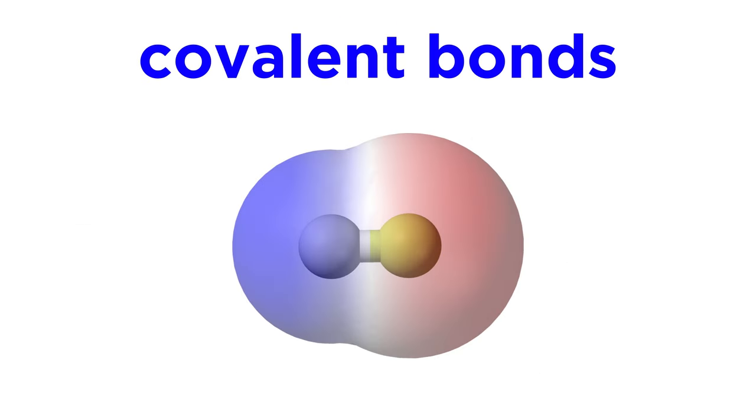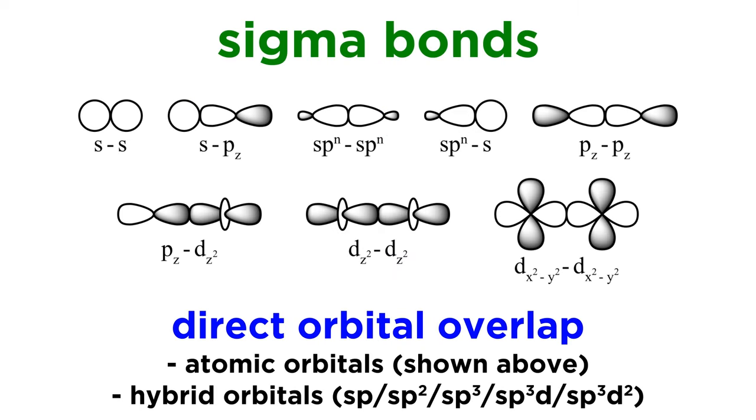In this way, we can look at any covalent bond in a slightly more sophisticated way. Sigma bonds involve direct orbital overlap, and this can be between atomic orbitals, or between two hybrid orbitals, be they sp, sp2, sp3, sp3d, or sp3d2, the ones we learned about from VSEPR theory. They can even be between an atomic orbital and a hybrid orbital.